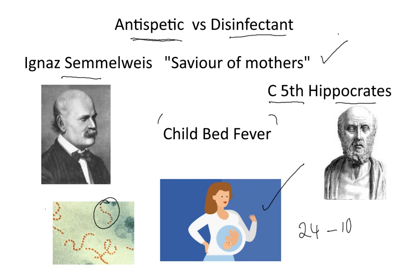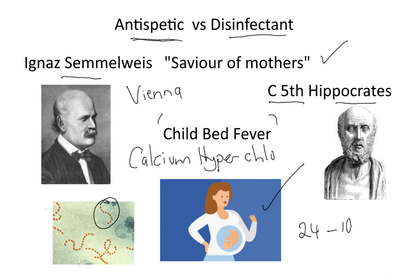Ignaz worked at Vienna General Hospital. What he did was he began to use a chemical called calcium hypochlorite. He would make solutions of this and then use it to wash his hands and indeed the hands of doctors and the patients — the pregnant women.